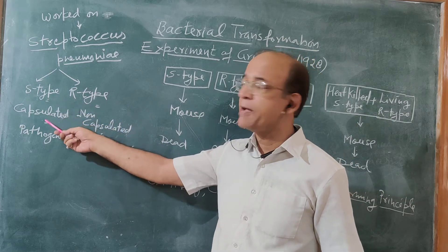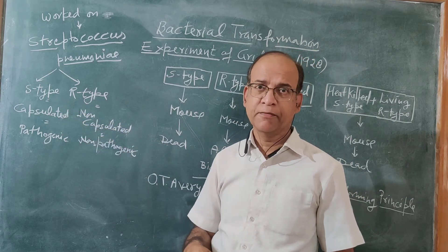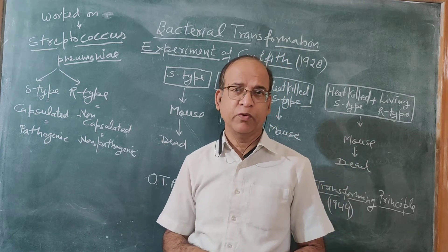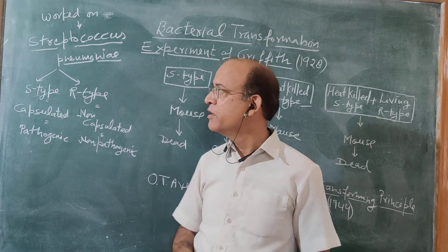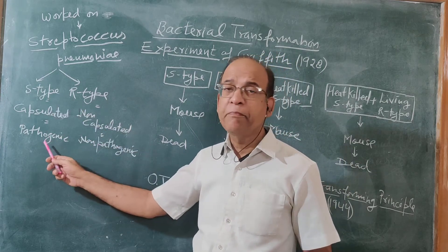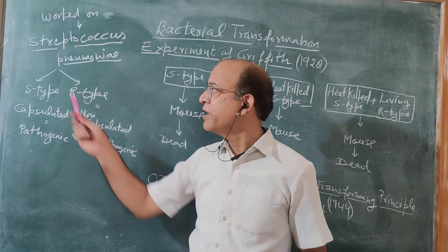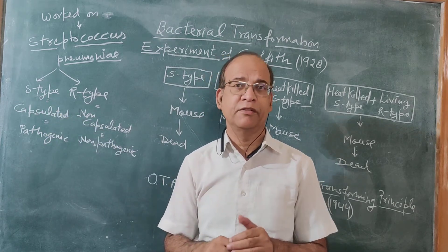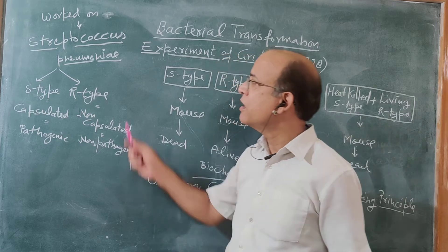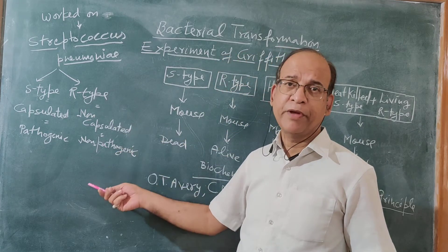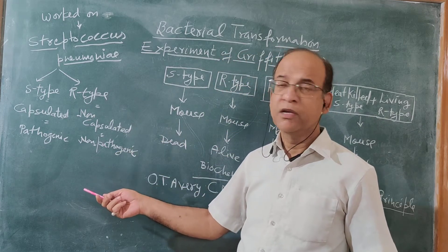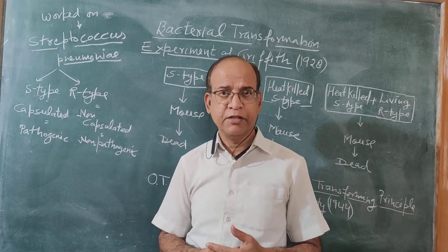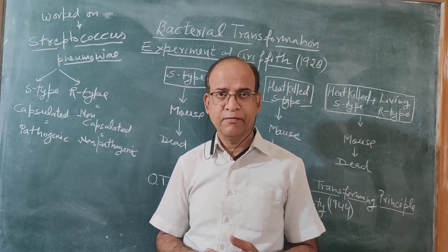One is S-type bacteria and another strain is R-type bacteria. S-type bacteria have capsules, whereas R-type bacteria do not have capsules. S-type bacteria is pathogenic, means S-type bacteria is able to cause disease, whereas R-type bacteria are non-pathogenic, means R-type bacteria are not able to cause disease.